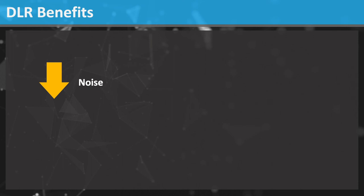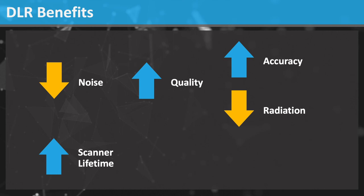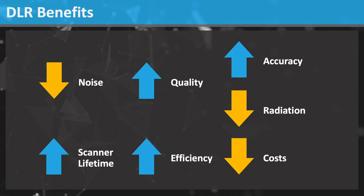DLR reduces image noise, which leads to improvement in CT image quality. This allows for improved accuracy or reduced radiation dose. DLR can extend the usable life of a CT scanner. The improved image quality can improve the efficiency of a radiologist by reducing read times. Both of these save costs, which essentially pays for the DLR software.